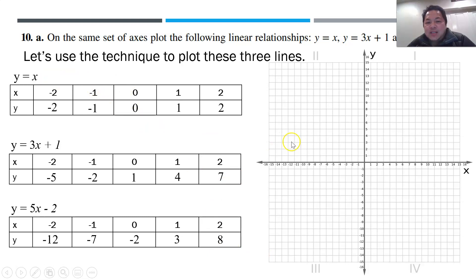So let's plot y equals to x. Again, you have minus 2, minus 2. Where's minus 2, minus 2? There you are. Minus 1, minus 1. 0, 0. 1, 1. 2, 2. Again, you plot the points. Minus 2, minus 12. Minus 1, minus 7.